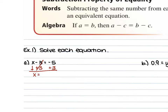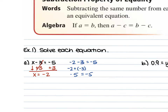Negative 5 plus 3 is negative 2, so x is equal to negative 2. You can take that negative 2 and plug it back into your equation for x and simplify it to see if you get a true statement. If we plug it back in, we'd have negative 2 minus 3 is equal to negative 5. They have the same sign, so it's negative 2 plus negative 3, which gives us negative 5 equals negative 5. This is a true statement, so we know our answer is correct.